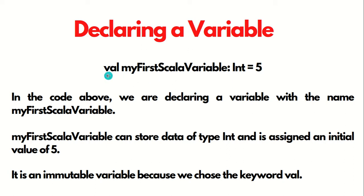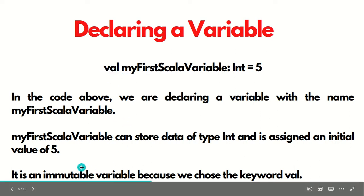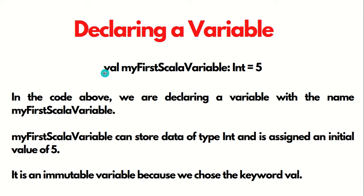In every Scala declaration, you'll be finding some prefix like VAL, VAR, or lazy. We'll be talking about these in detail in upcoming videos. But VAL here is an immutable variable — immutable means which we can't change. We can also have VAR, and the meaning of VAR means we can change. Let's talk about it in a little detail in the next slide.